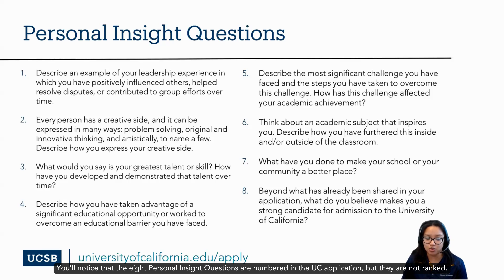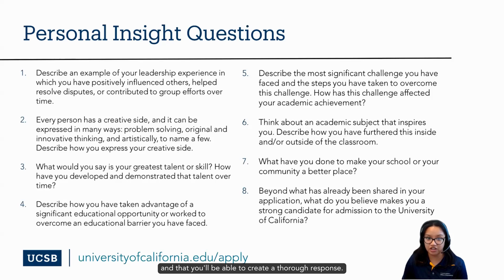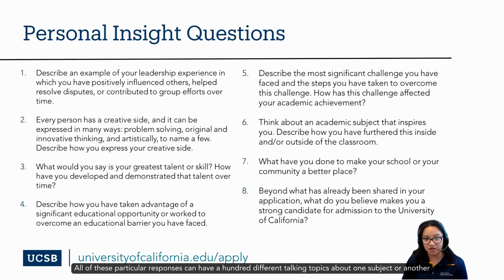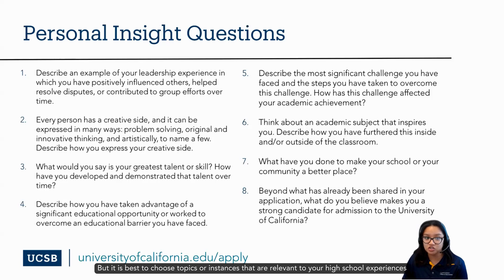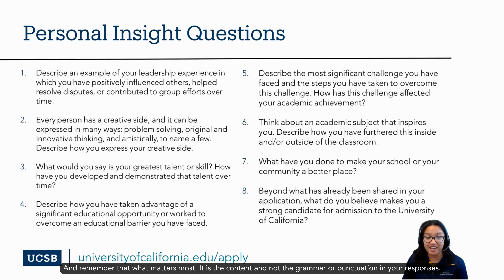The eight Personal Insight Questions are numbered in the UC application, but they are not ranked. We do not value one question over another, so please choose the questions that are the best fit for you and that you'll be able to create a thorough response. All of these responses can have a hundred different talking points about one subject or another, and it's completely up to you, the student, to decide. It is best to choose topics or instances that are relevant to your high school experiences or years that have impacted who you are today as an applicant — that is what matters most.